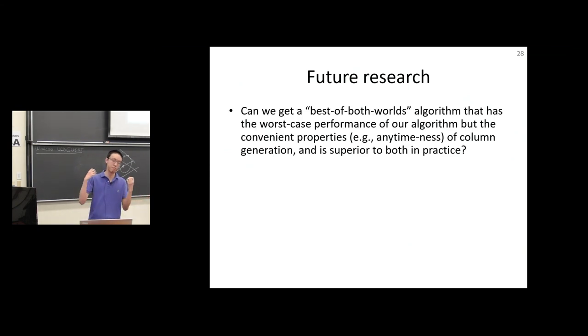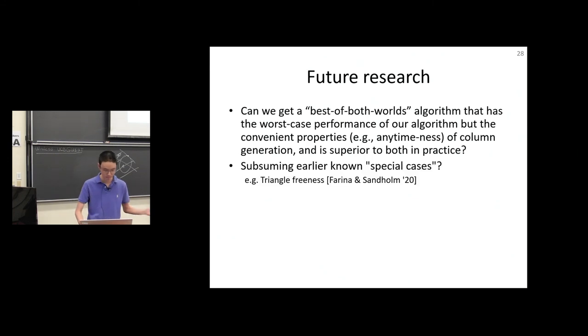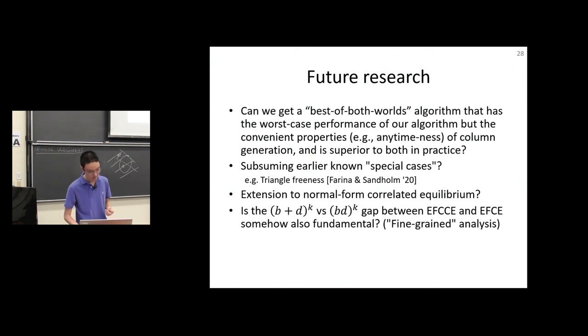In the future, questions we might ask include: can we get a best-of-both-worlds algorithm that has both the worst-case performance of our algorithm but the convenient properties of column generation, and is better than both in practice? Can we do everything we've done here while also subsuming earlier special cases such as triangle freeness? Our paper doesn't quite subsume these earlier polynomial time results for some technical reasons. Is there an extension to normal form correlated equilibrium? And is the B plus D versus BD gap between EFCC and EFCE somehow also fundamental? This would require fine-grained lower bound analysis. Can regret minimization also yield these optimal correlated equilibria? This we don't know.